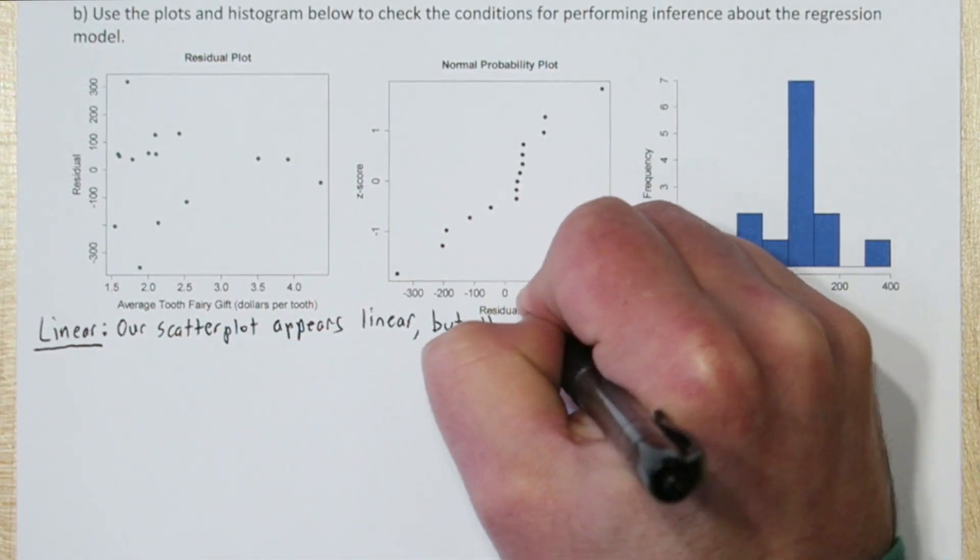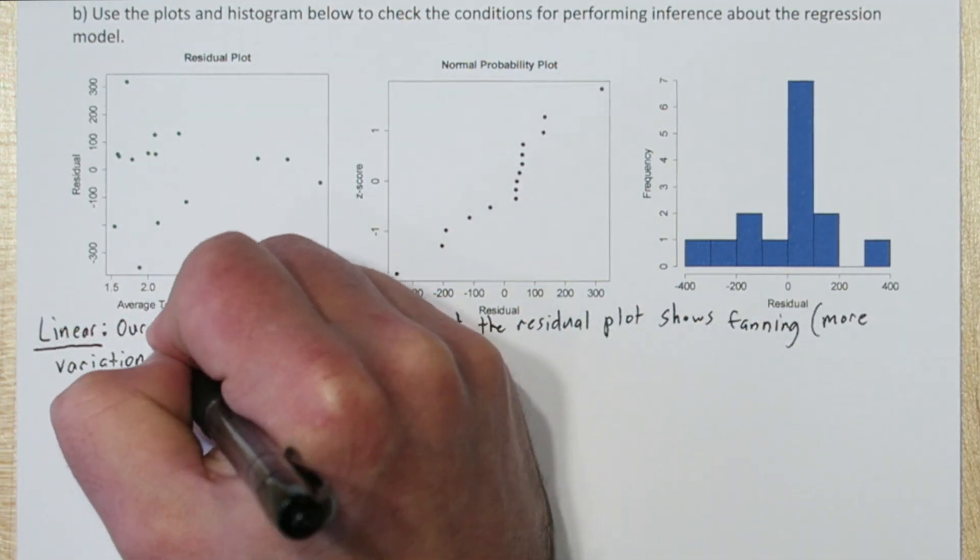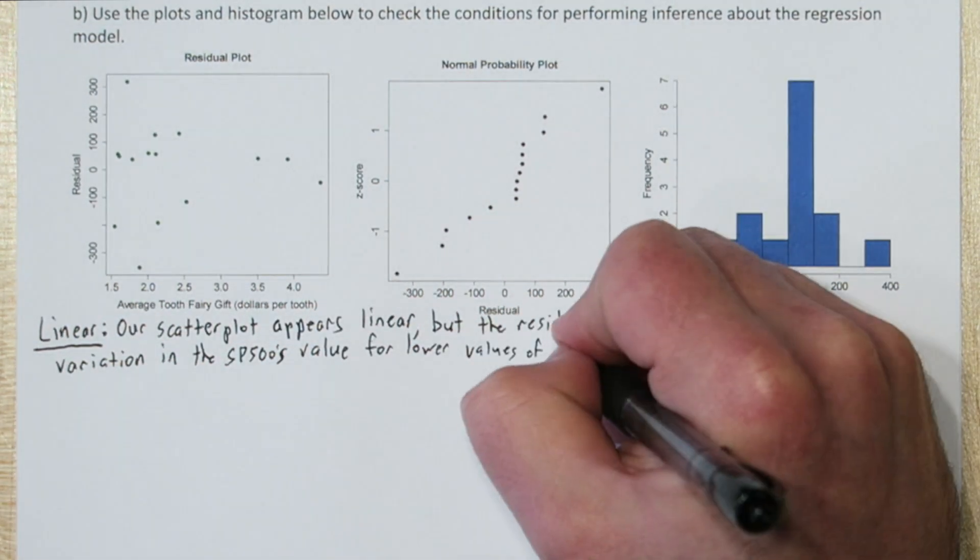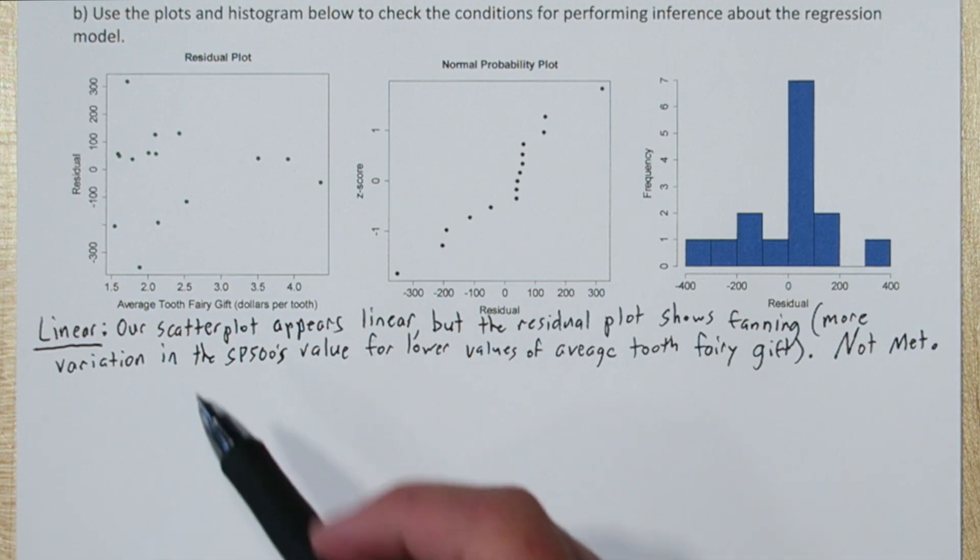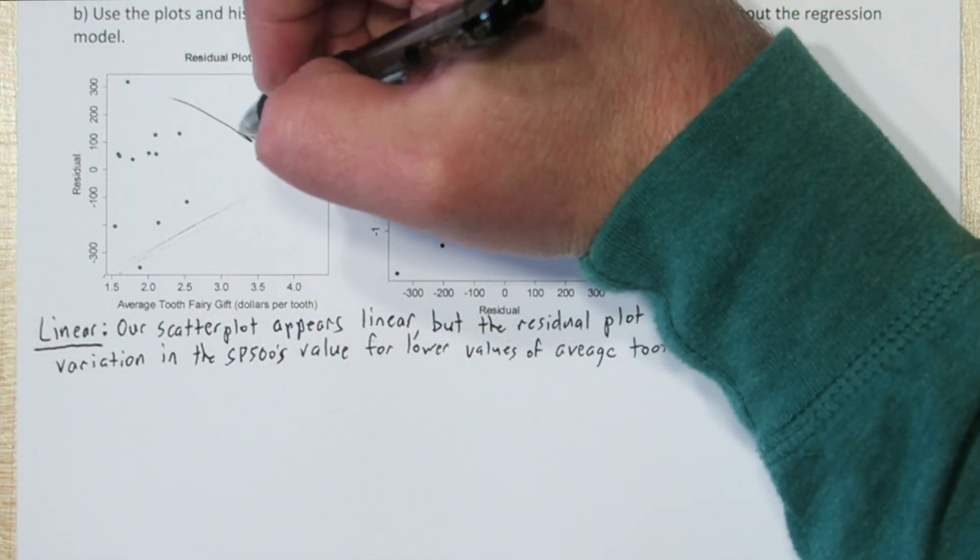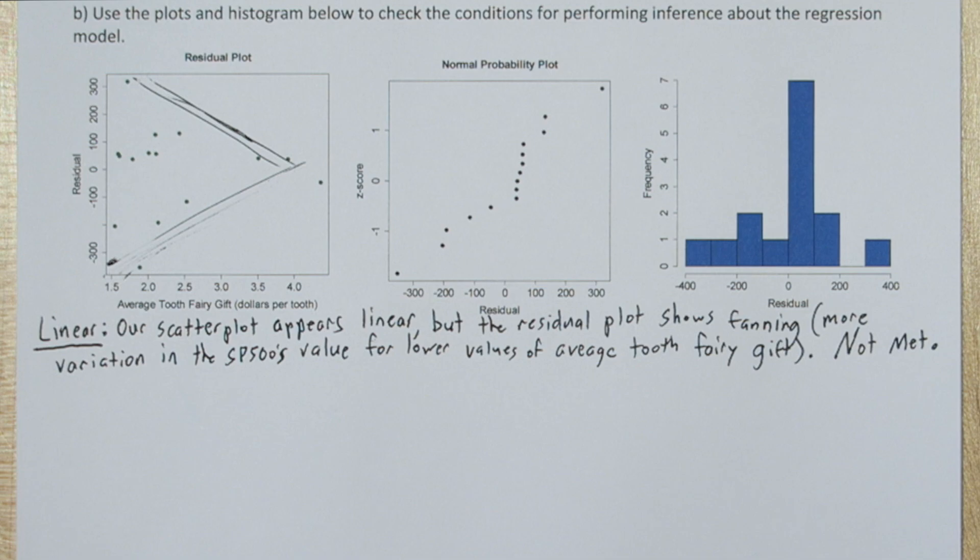There's five conditions we have to check here. First is linear. Now our original scatter plot appears linear, but the residual plot shows fanning. You can see that the residuals are a lot larger for lower average Tooth Fairy gift amounts than for the higher ones. This is called fanning, and our linear condition is not met.